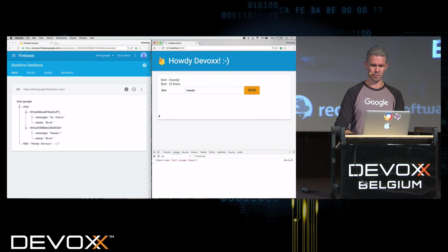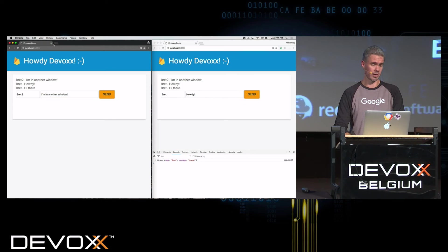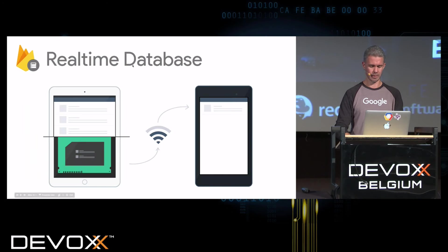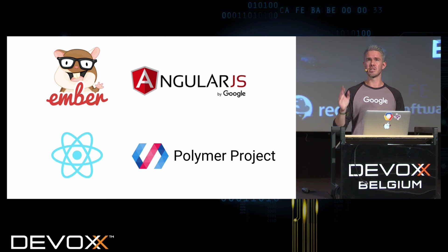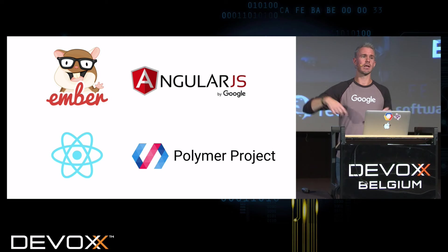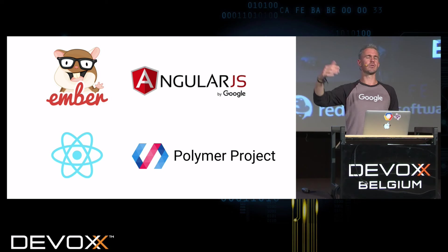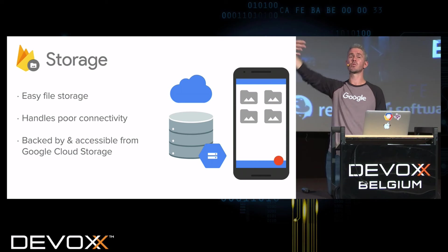That's all the code we had to write to get a real-time chat application going. Opening a second window as Brett 2, hitting Send, and you can see it shows up in the other window too. I should also mention there are plugins for Ember.js, React, and Polymer that will do three-way binding for you — binding to the database, to the UI, and capturing user input — making it really easy if you use any of these frameworks.